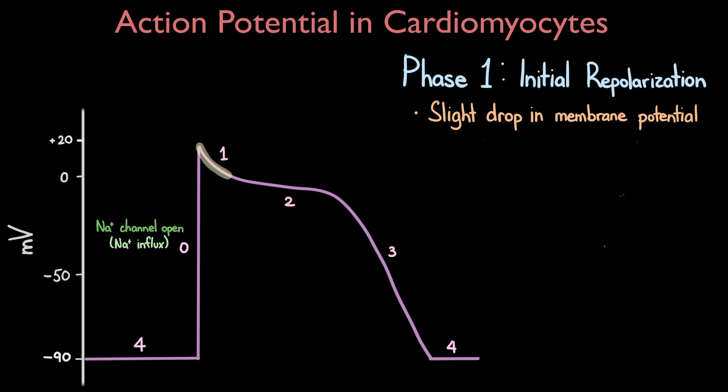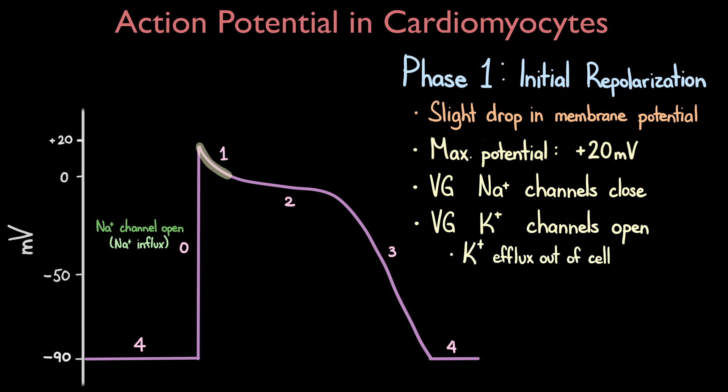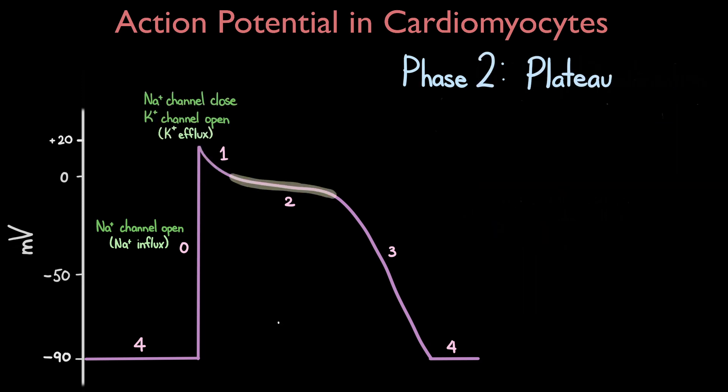Next is phase one, the initial repolarization phase, or early repolarization. There is a slight drop in the membrane potential in this phase. When the membrane potential reaches the max voltage of around 20 millivolts, the sodium channels inactivate and block the movement of sodium into the cell. At the same time, potassium voltage-gated channels open to allow an efflux of positively charged potassium out of the cell, effectively leading to a slight drop in the membrane potential.